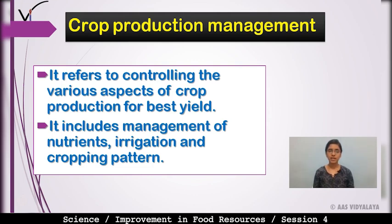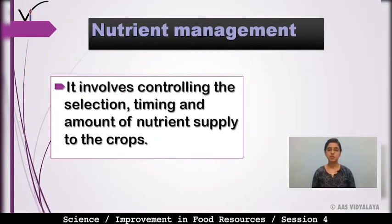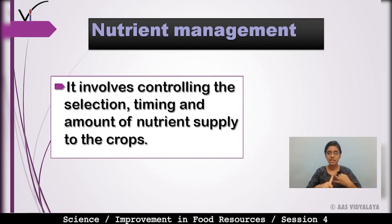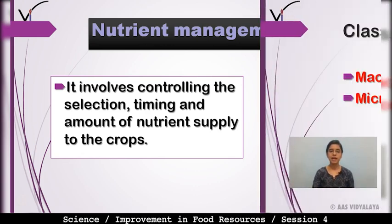Crop production management includes management of nutrients, irrigation, and crop pattern. In nutrient management, it involves controlling the selection, timing, and amount of nutrient supply to the crops. We have to manage the proper selection, timing, and amount of nutrients supplied to crops.